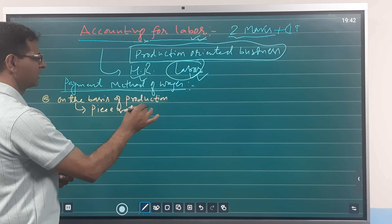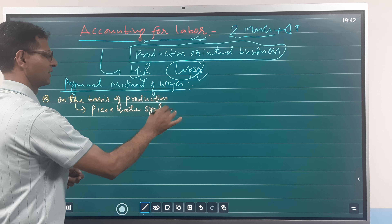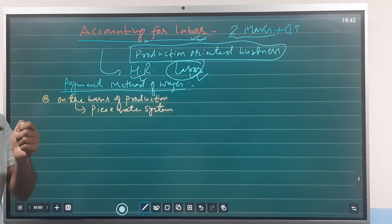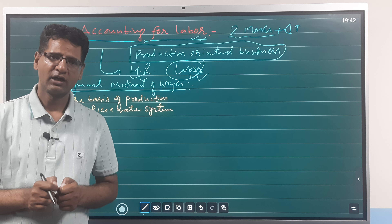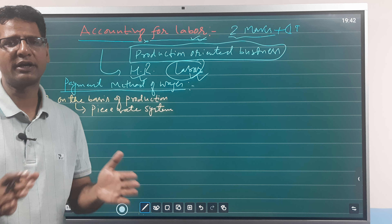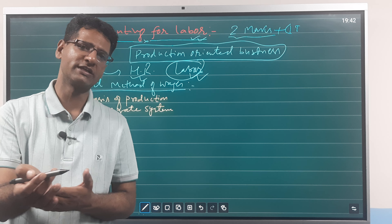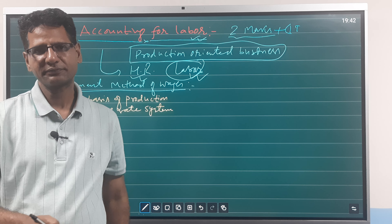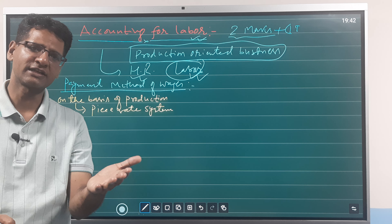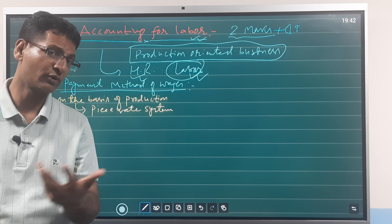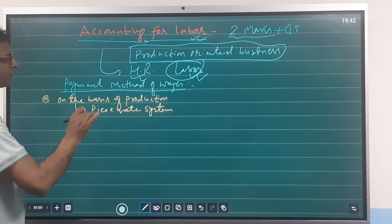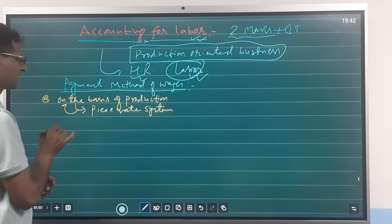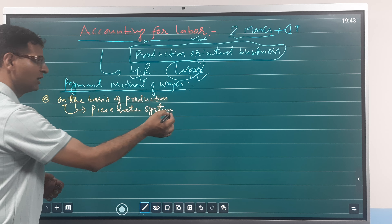The piece rate system means: how many units does an employee produce per day, per week, per month? More production means more wages; less production means less wages. So wages are paid on the basis of production.